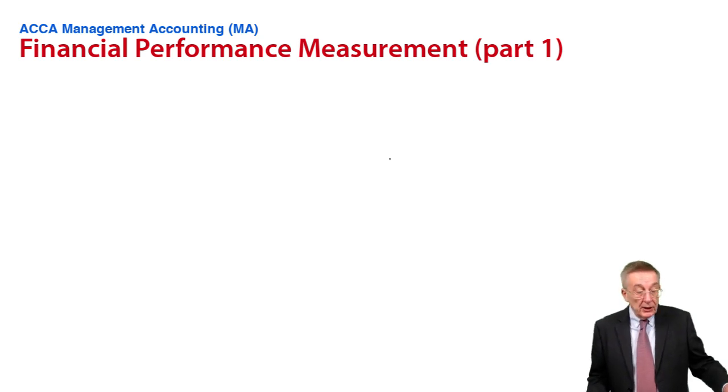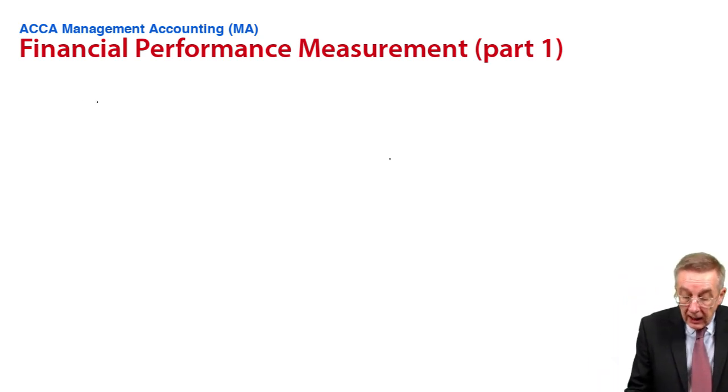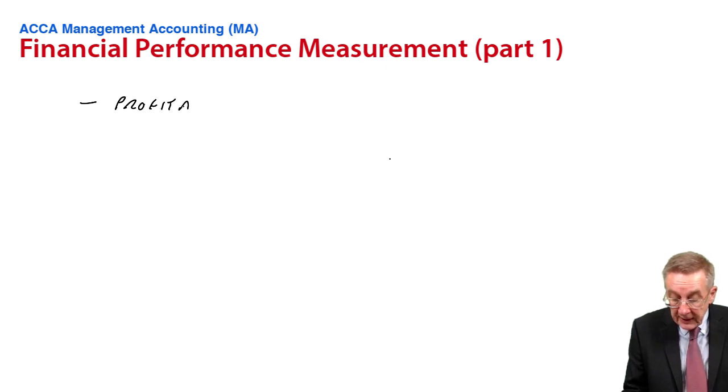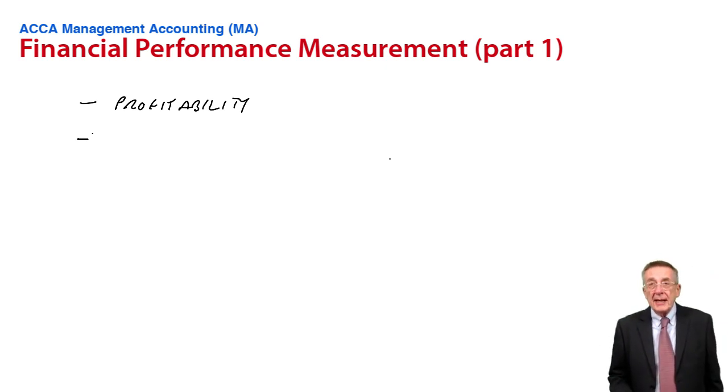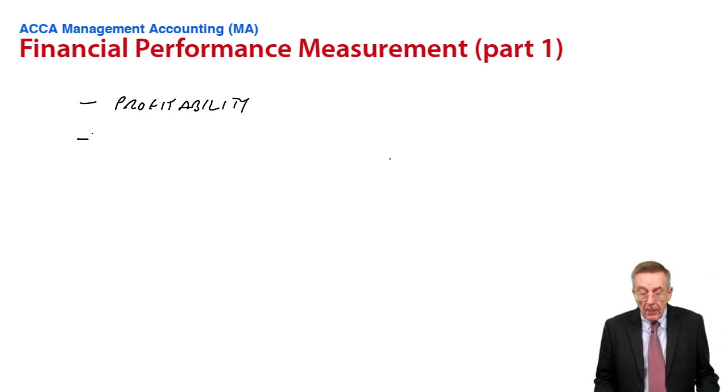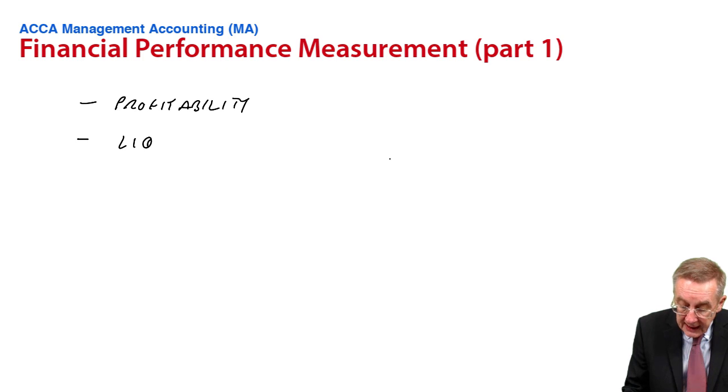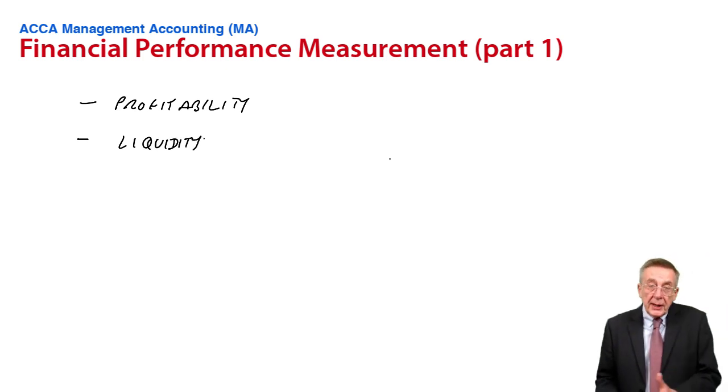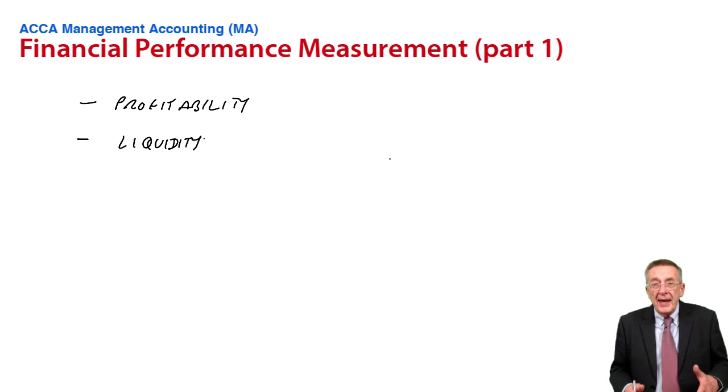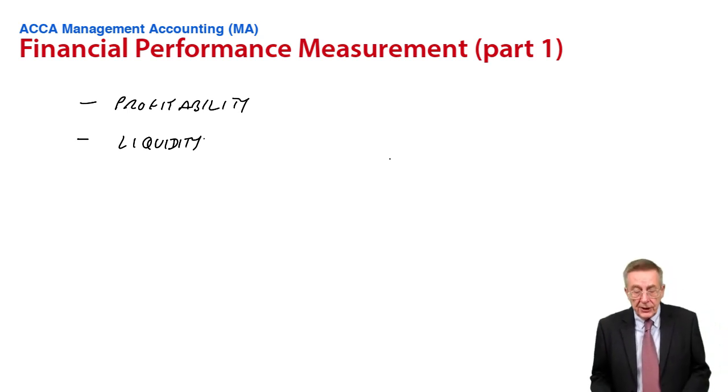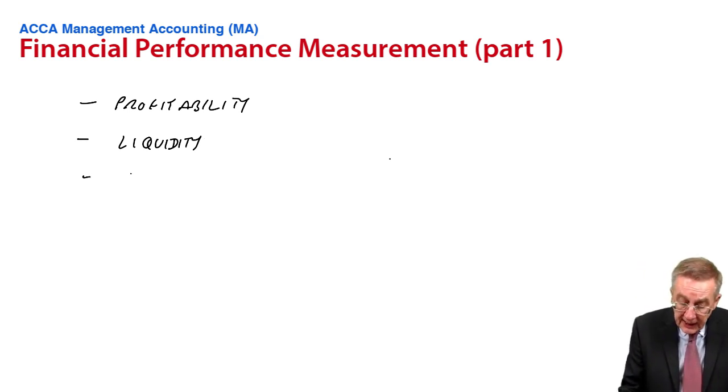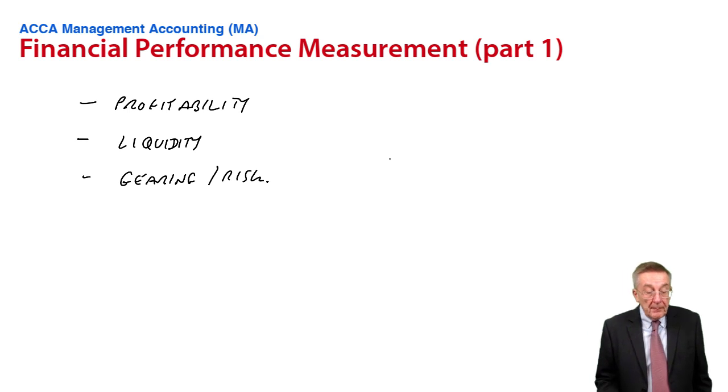The main areas, as I mentioned on the previous page, which I'll explain one by one as we go through: profitability. Clearly, we want to know if the company is making more or less profit. Liquidity, which is looking to see, can the company pay its bills? Has it got enough cash? And gearing or risk, as I'll explain when we come to it. But let's look at them one by one.